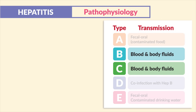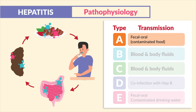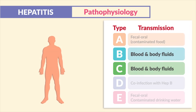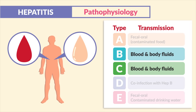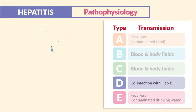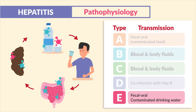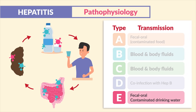Starting at the top, Type A is transmitted by the fecal-oral route, typically through contaminated food. Types B and C are transmitted through blood and body fluids. Type D is a co-infection with Type B, and Type E is transmitted via the fecal-oral route, typically contracted from contaminated drinking water.